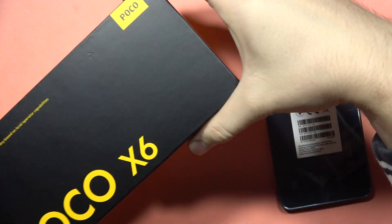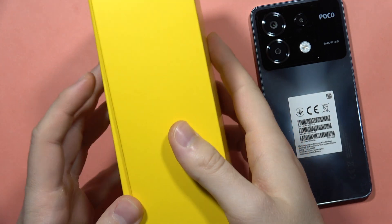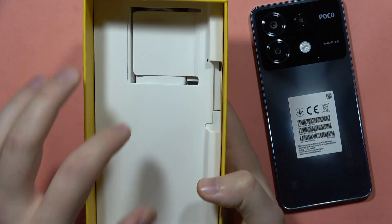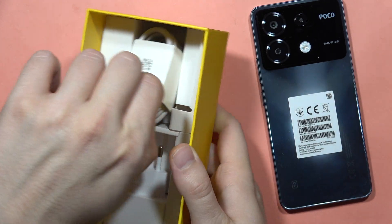Hey, if you wonder if the Poco X6 5G from the European distribution comes with the USB cable in the box, I can quickly check this for you. As you can see right here, we can find the USB cable.